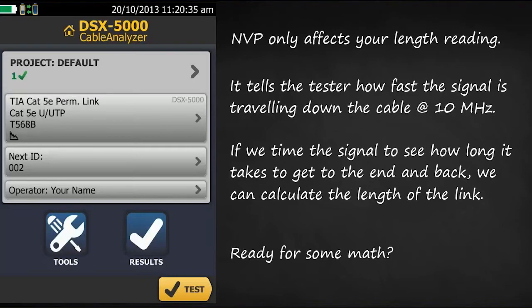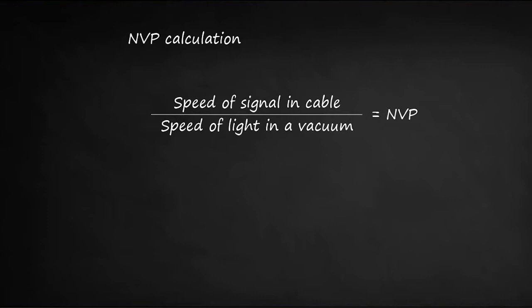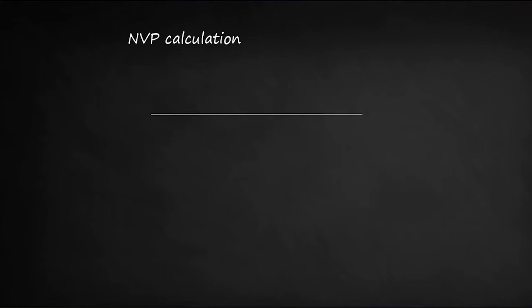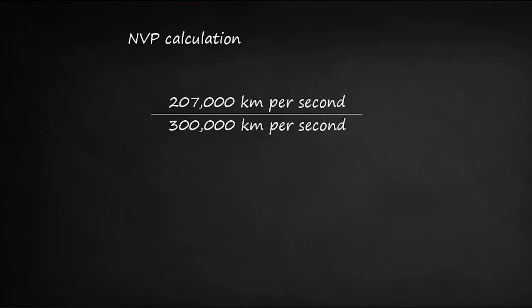Are you ready for some math? MVP is calculated by taking the speed of the signal in your cable and dividing it by the speed of light in a vacuum. A typical value for a signal in a cable may be 207,000 kilometers per second. The speed of light in a vacuum is 300,000 kilometers per second. That gives us an MVP of 0.69, or 69%, in this example.